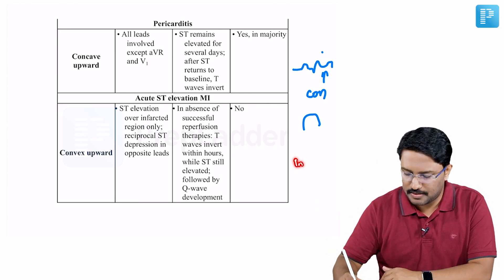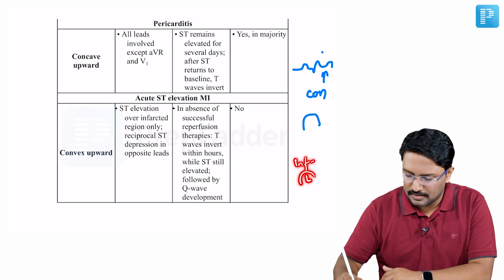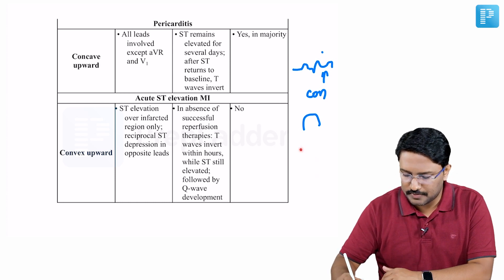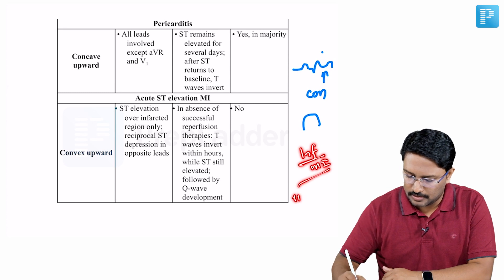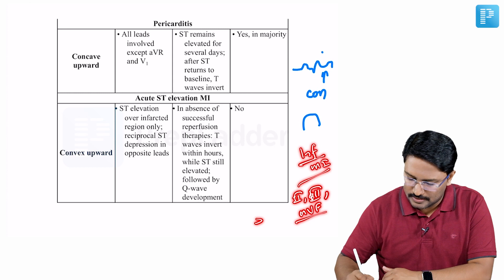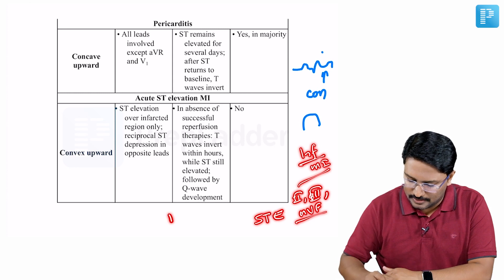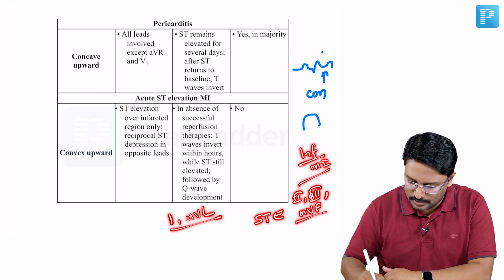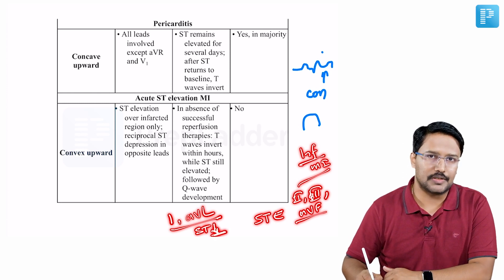For example, inferior and lateral leads act as reciprocal to each other. If there's an inferior MI, in leads 2, 3, and AVF you'll have ST elevation, and in 1 and AVL particularly, you'll have ST depression as the reciprocal change.